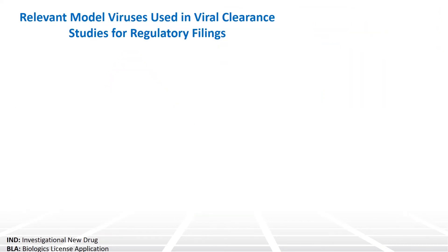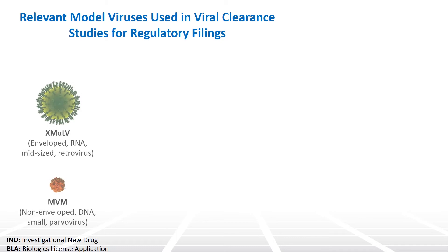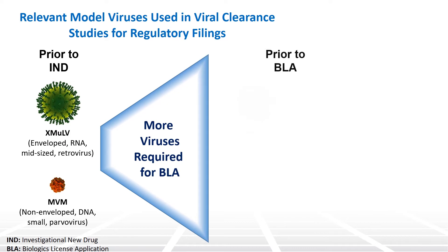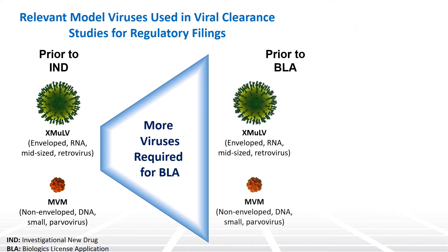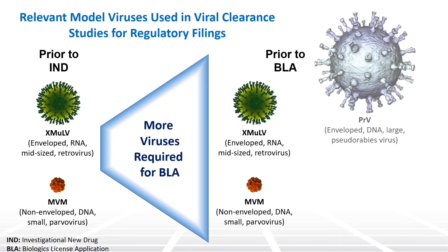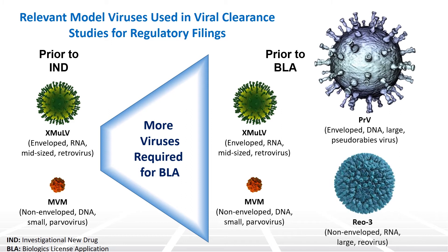Which viruses to assess is critical. In the case of monoclonal antibodies, spiking studies conducted for an IND filing utilize two different virus types, as shown here. Prior to a BLA filing, manufacturers typically evaluate two additional viruses to represent the remaining classes of potential contaminating virus.